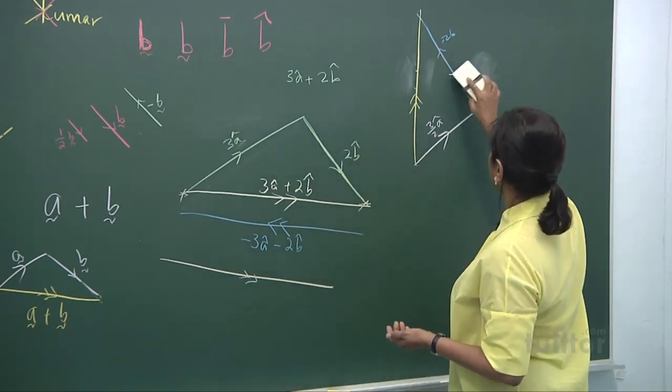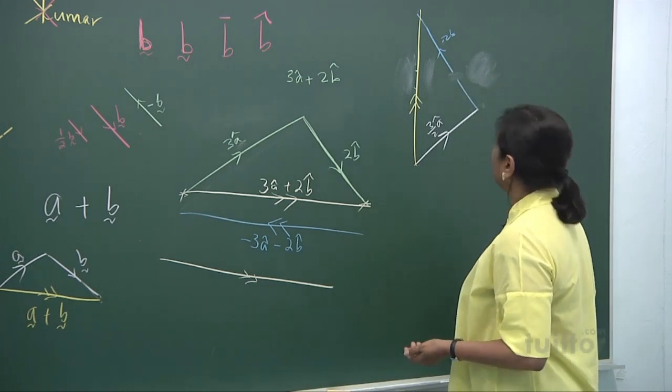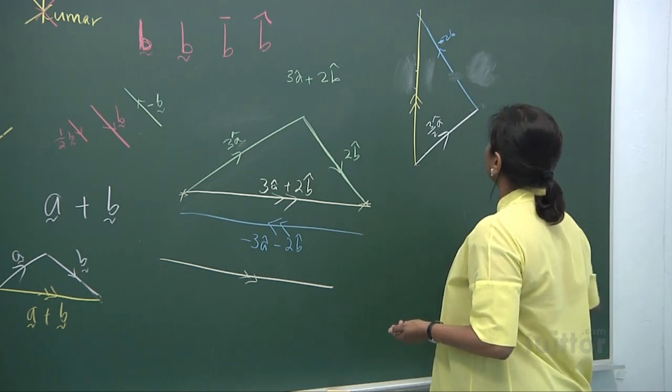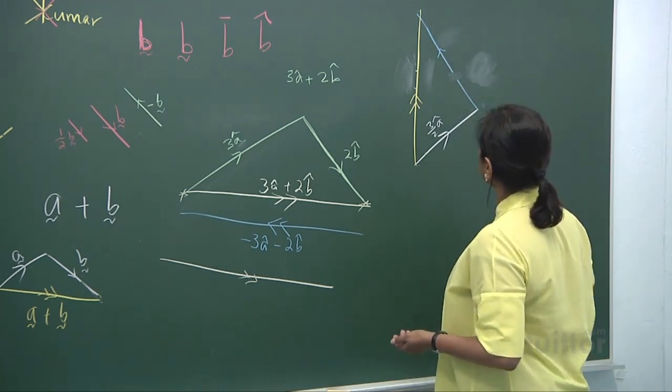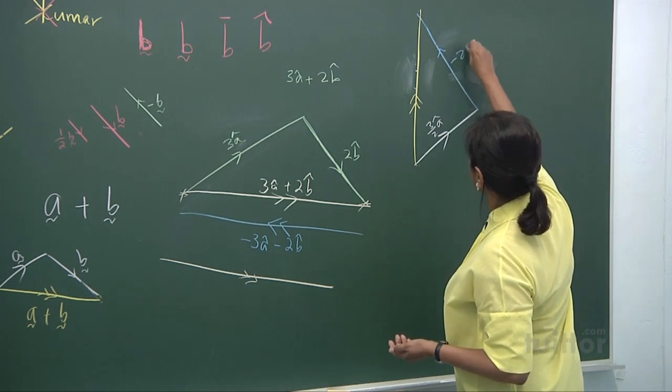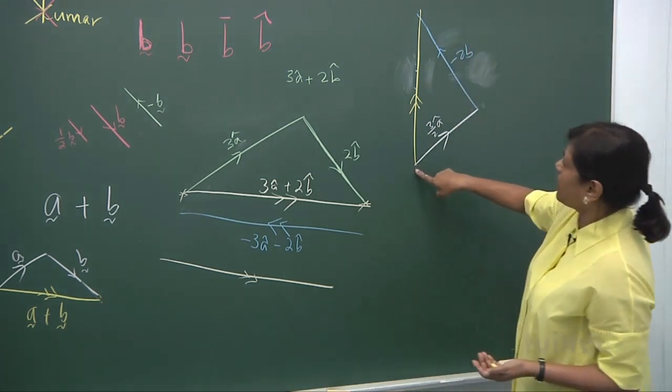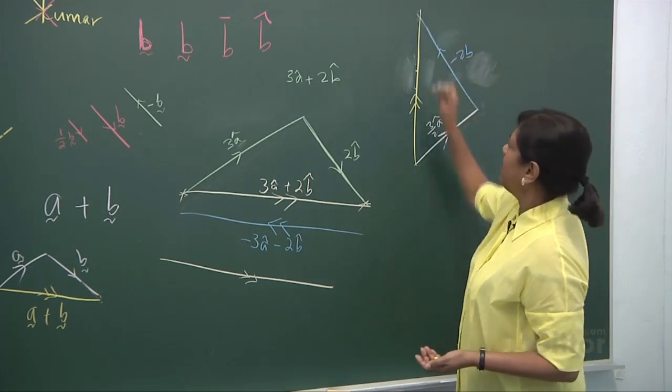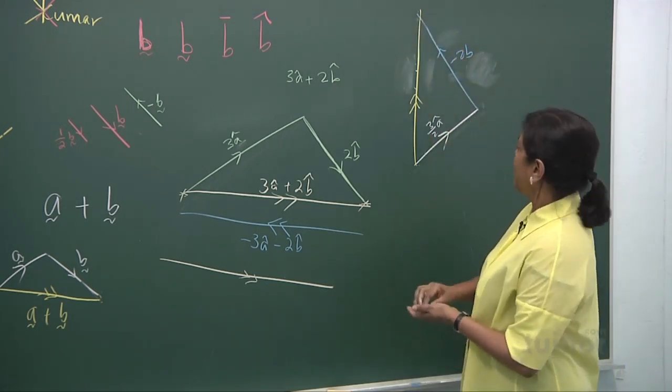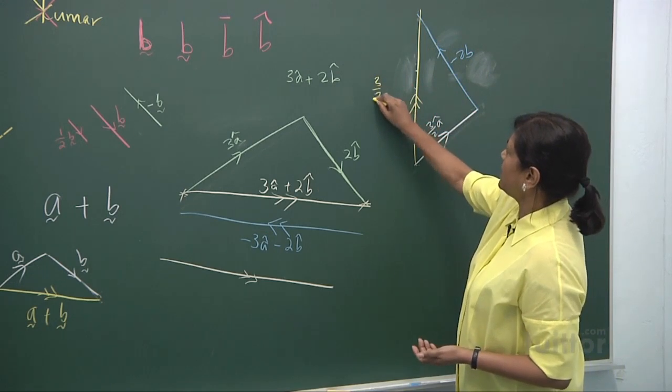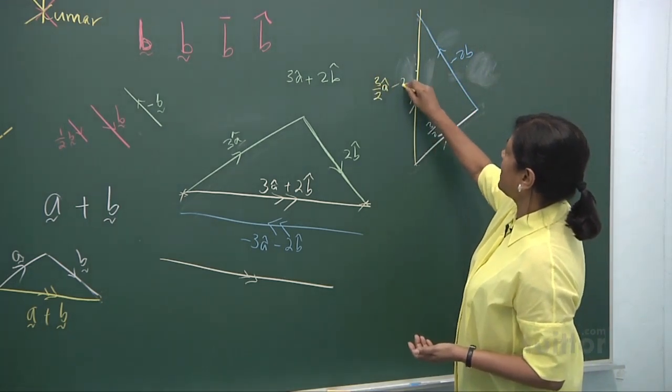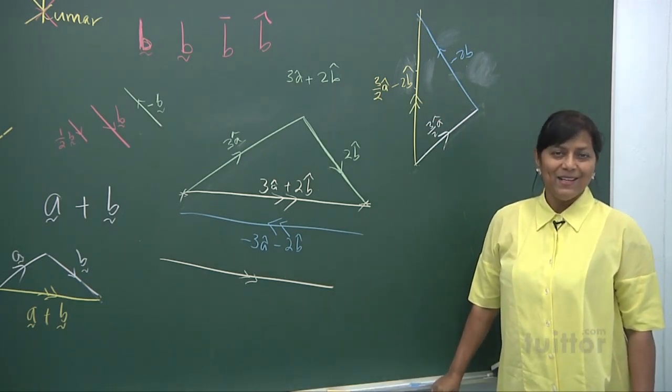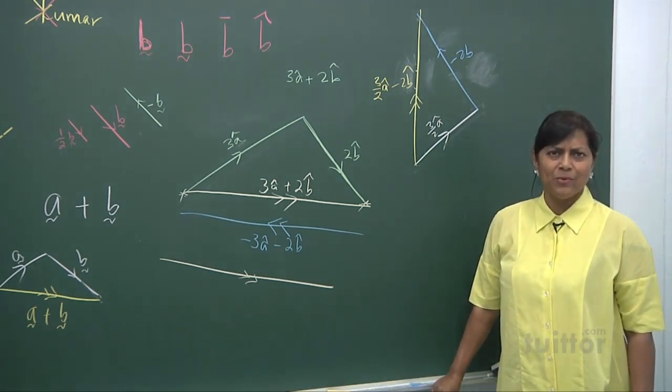So I'm going to write it out again. I'm going to say, this blue one is a minus 2b. This is a minus 2b. So look at this again. 3 over 2 a minus 2b gives us this resultant vector. And this vector is 3 over 2 a minus 2b. This is what we get. Good that you understood them.